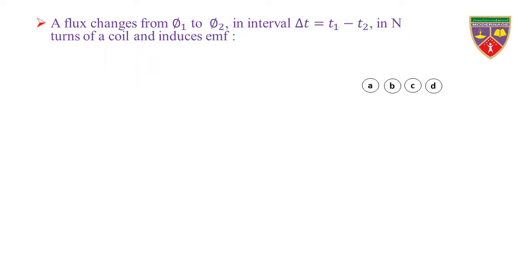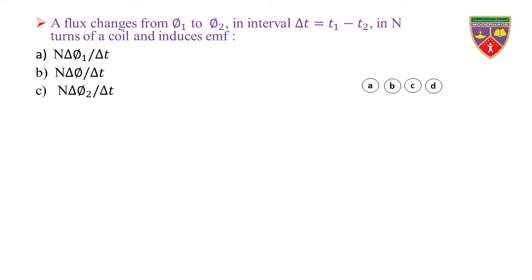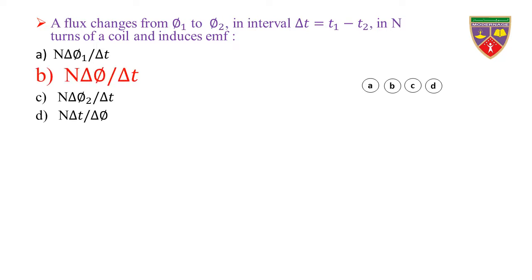Question: When magnetic flux changes from Φ₁ to Φ₂ in interval Δt = t₁ − t₂, the induced EMF in a coil of N turns is — option A: nΔΦ₁/Δt, option B: nΔΦ/Δt, option C: nΔΦ₂/Δt, option D: nΔt/ΔΦ. The key is nΔΦ/Δt, therefore the correct option is B.